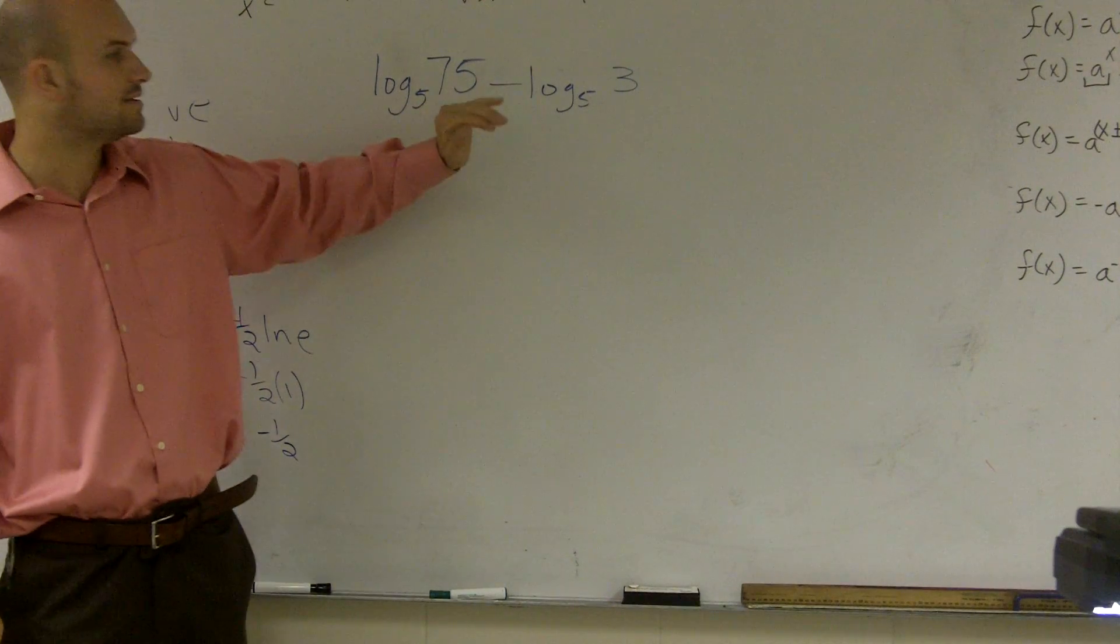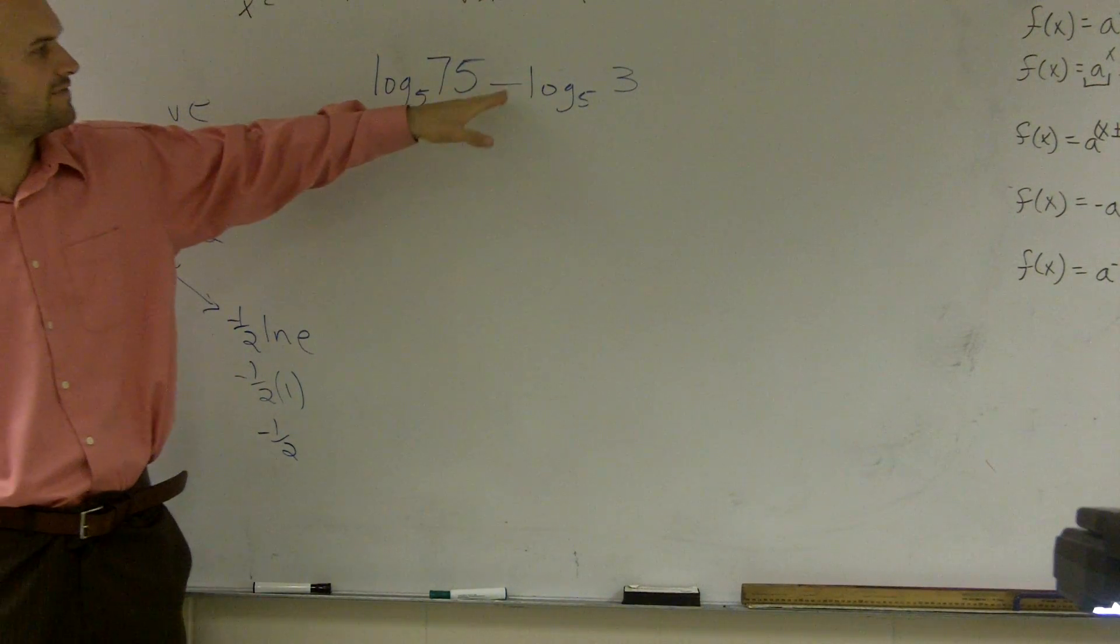Okay, what I'd like to do is show you guys how to evaluate when you have log base 5 of 75 minus log base 5 of 3.